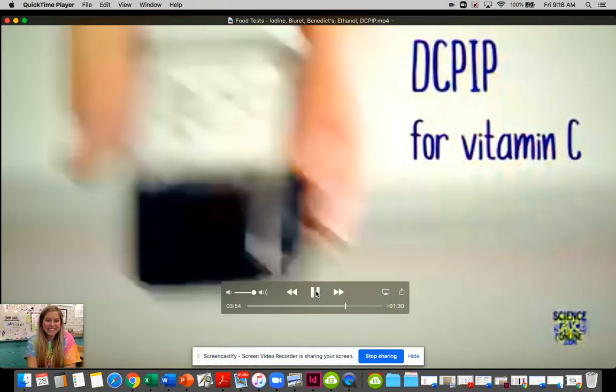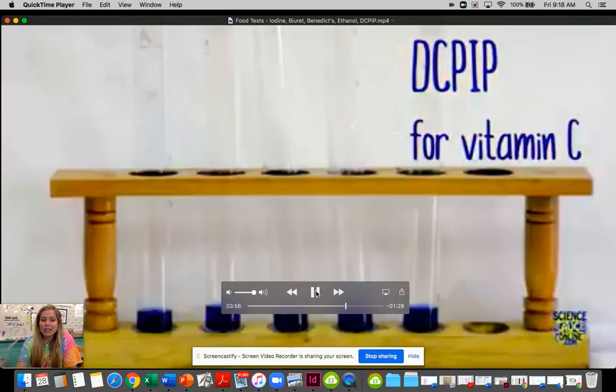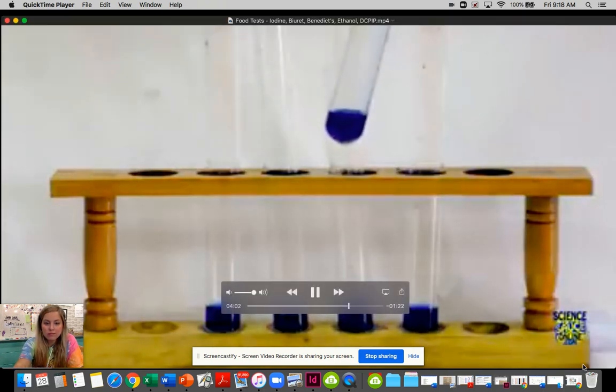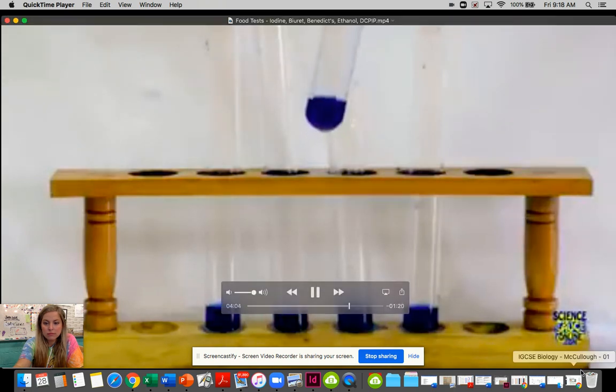DCPIP or DCPIP to test for the presence of vitamin C. Fill your test tubes up with DCPIP without your samples present in them. Then add your samples in a drop at a time and shake as you're doing it.